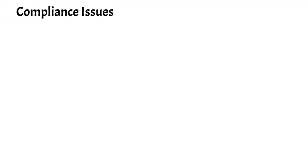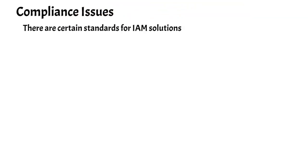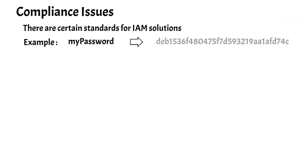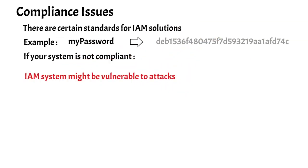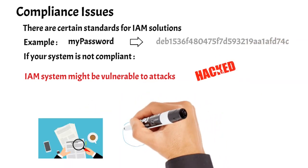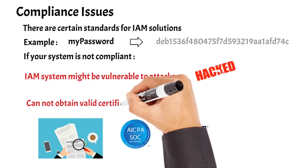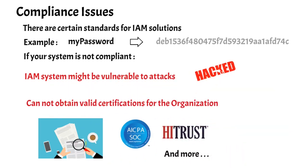In-house solutions might not be compliant with security standards. Generally, there are certain security standards for identity and access management solutions. One simple standard is that user passwords should not be stored in plain text — instead, a hash of it should be stored for later verification. If your IAM solution is not compliant with these kinds of guidelines, it is vulnerable to attacks. Also, some organizations go through various compliance audits to ensure they are in compliance with international standards, and even these audits might fail due to the usage of non-compliant systems for user identity and access management.